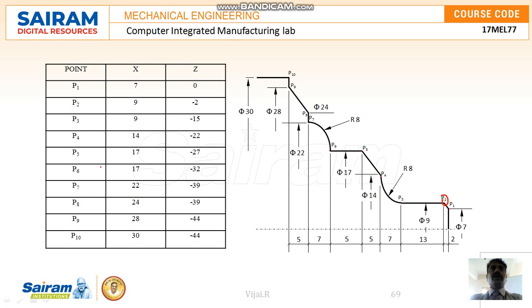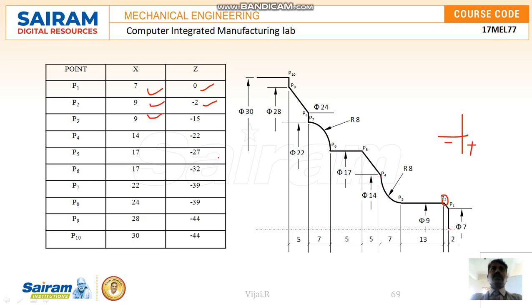The points are mentioned as coordinate values. P1 has diameter 7 and Z 0 — that is the length. The Z-minus direction is leftward and Z-plus is rightward. P2 is where the diameter increases to 9 and the Z travel is minus 2. P3 is where the diameter remains 9 and the distance traveled is minus 15 in the leftward direction.